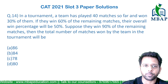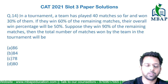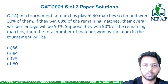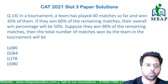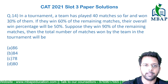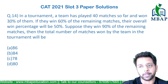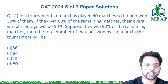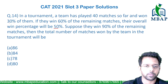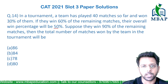Have a look at the next question on percentages. The question says in a tournament, a team has played 40 matches so far and won 30% of them. If they win 60% of the remaining matches, the overall win percentage is basically 50%.